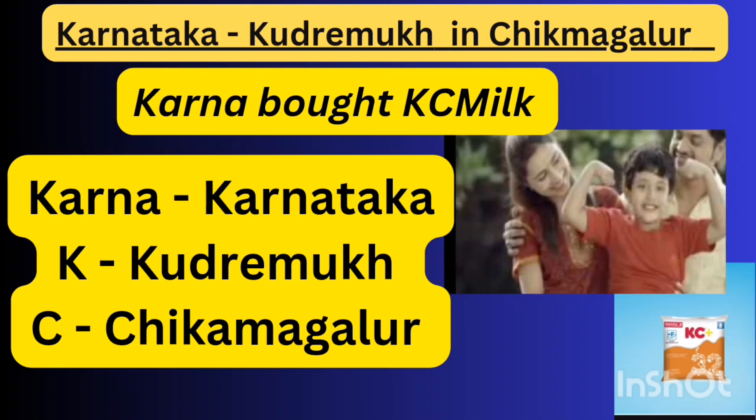Karna bought K.C milk. 'Karna' refers to Karnataka. 'K' refers to Kudermuk, and 'C' refers to Chikmagalur.